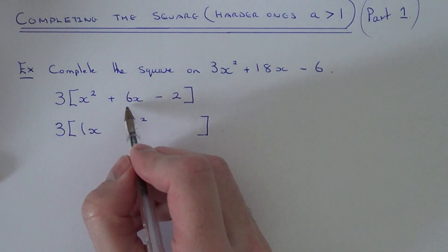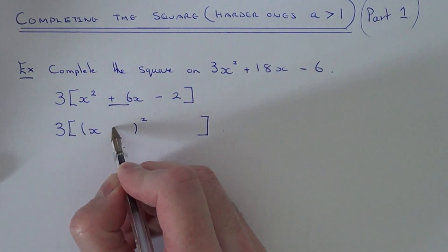So first thing you need to do then is half the number before x. So half of 6 is 3. This number goes here.